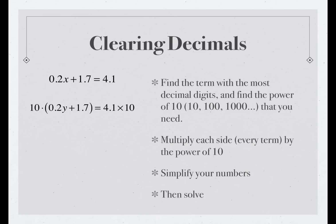So, we'll multiply by 10 each side, we'll distribute on the left, and we'll get 10 times 0.2 is 2, 2y, plus 10 times 1.7, that's 17, so we have 2y + 17 = 41. And from there, it's easy to solve. Subtract 17 from each side, divide by 2, and you'll get your answer. And I'll leave that as an exercise for you.